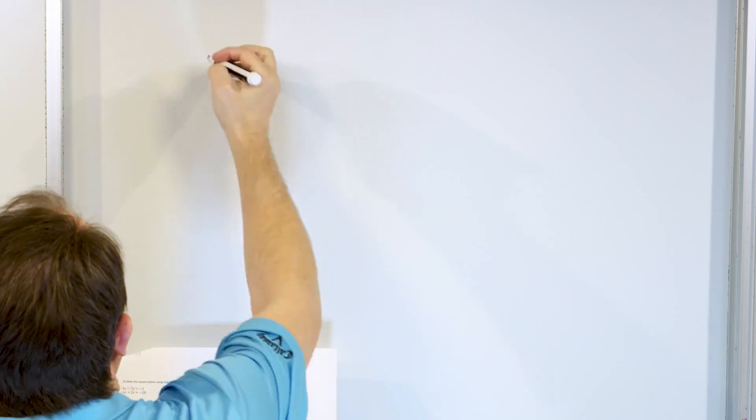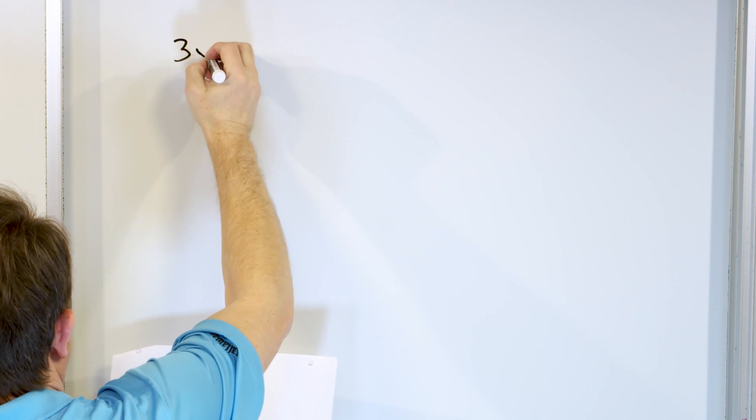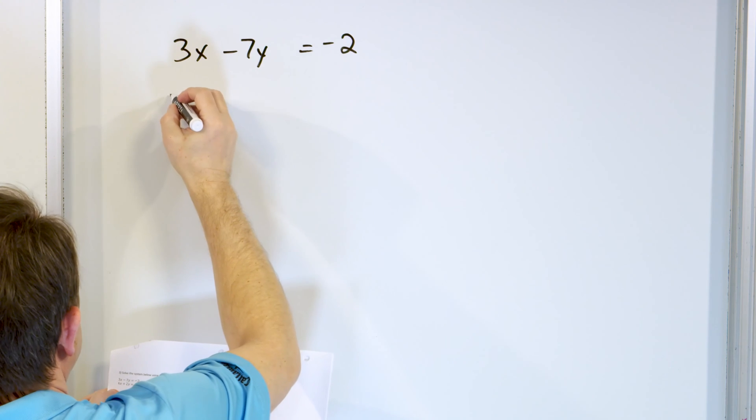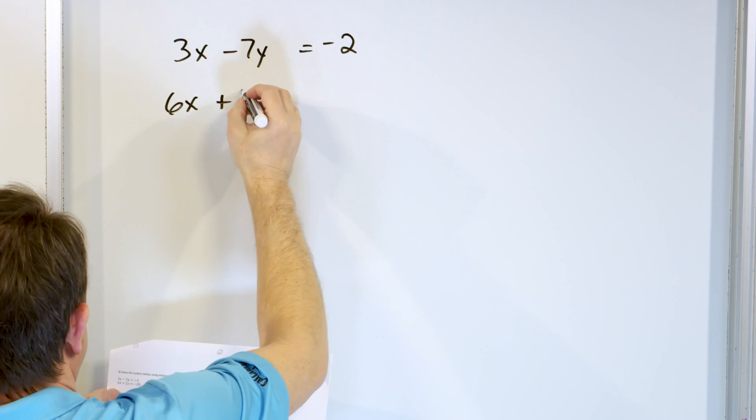Let's take a look at problem number 3. So far we've had two problems, both of which have had lines intersecting at one point. We're going to do one more of a similar form, and then the last problem I'll give you a punchline ahead of time — it'll be parallel lines and we'll see what happens when there's no solution at all. Problem number 3: 3x minus 7y equals negative 2, and 6x plus 2y equals negative 20.